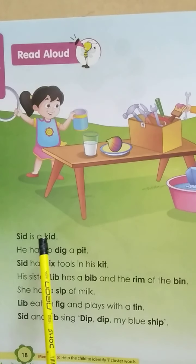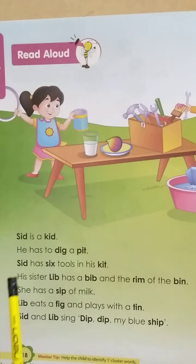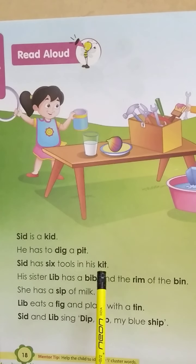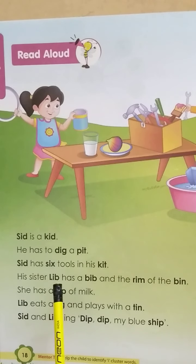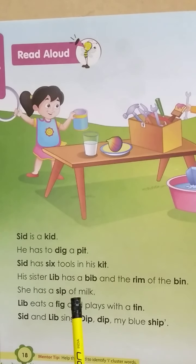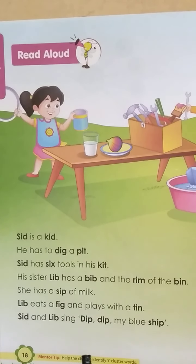Sid is a kid. He has to dig a pit. Sid has six tools in his kit. His sister Lib has a bib and the rim of the bin. She has a sip of milk. Lib eats a fig and plays with a tin. Sid and Lib sing: Dip, dip, dip my blue ship.